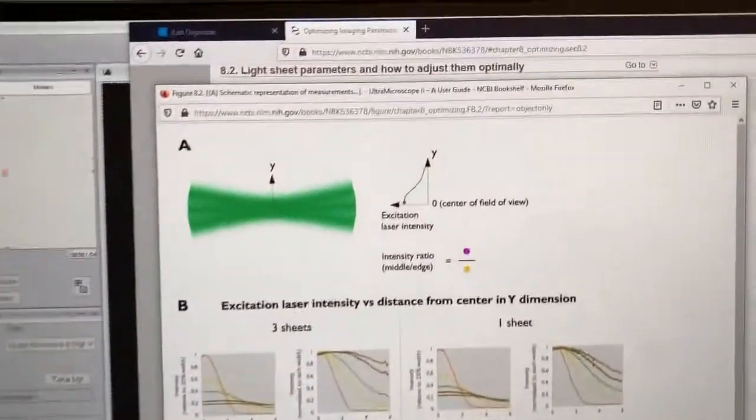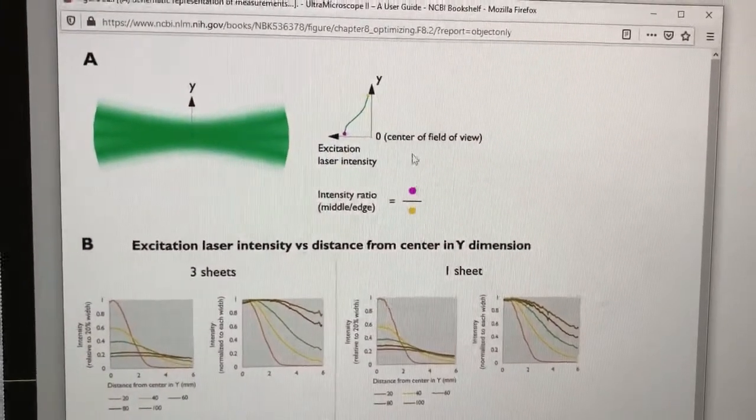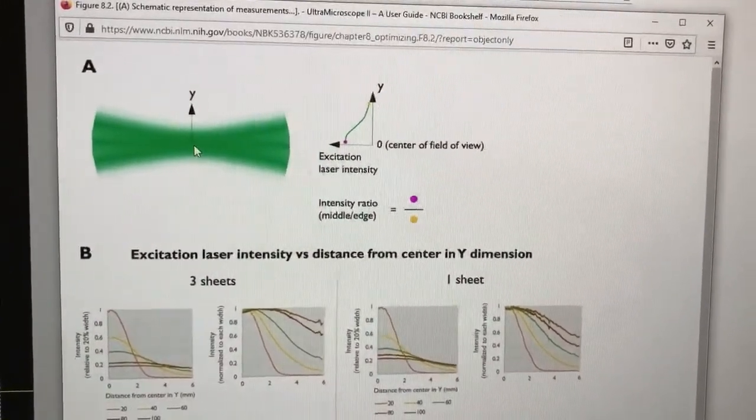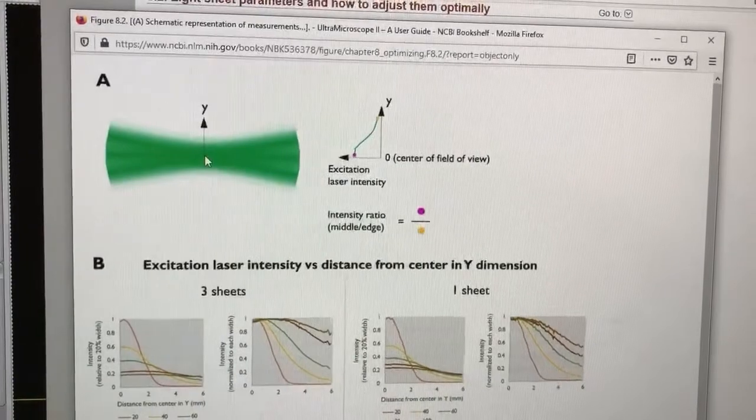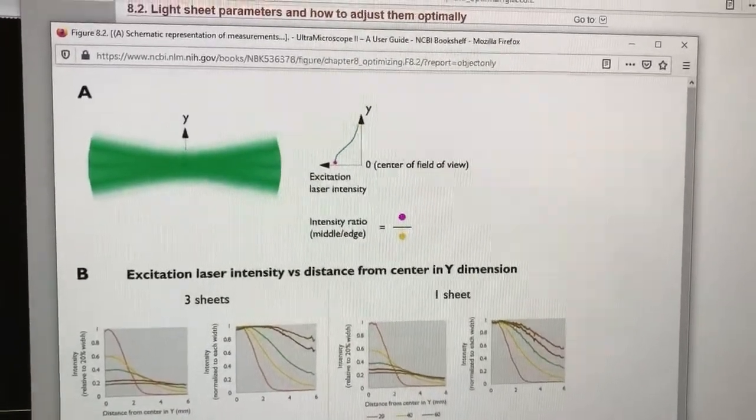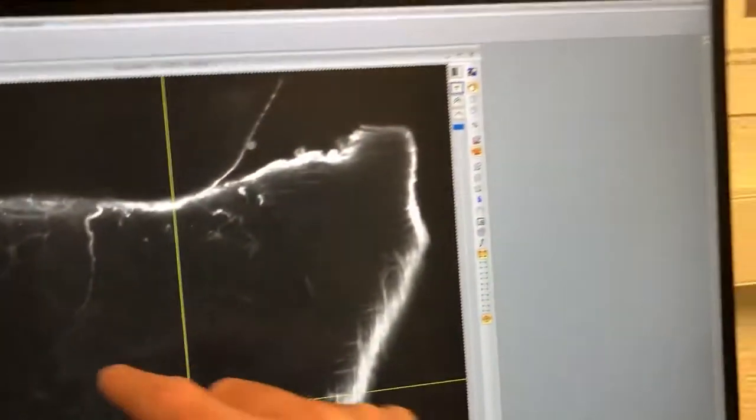So the idea for this is the following: in the very middle in the Y dimension, the light sheets will be brightest, and then as you move away from that they'll be dimmer. So in the middle things will be brighter, and as you move away it'll be dimmer.